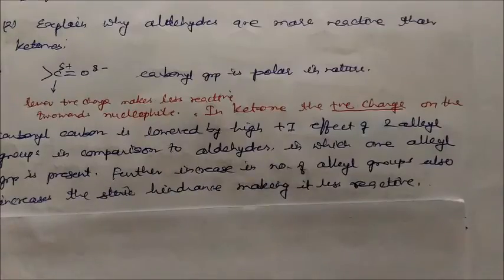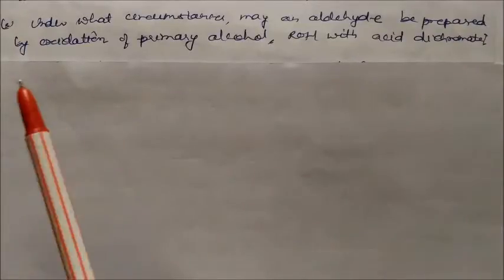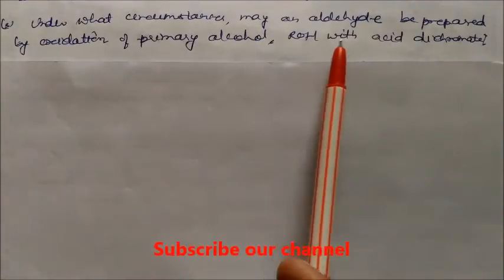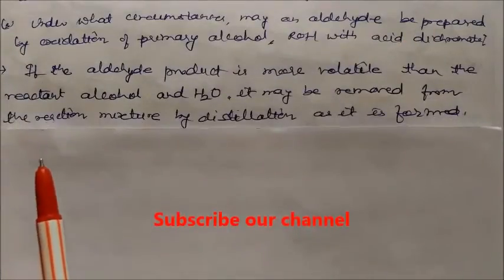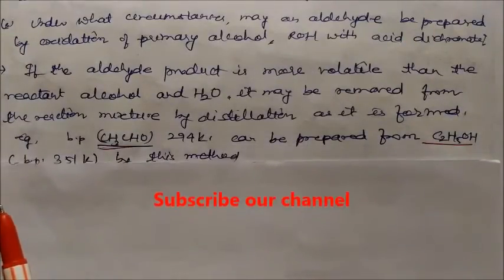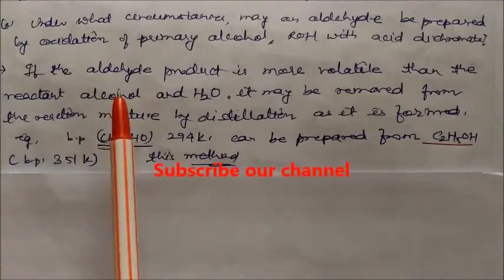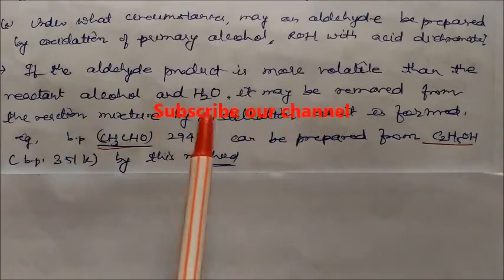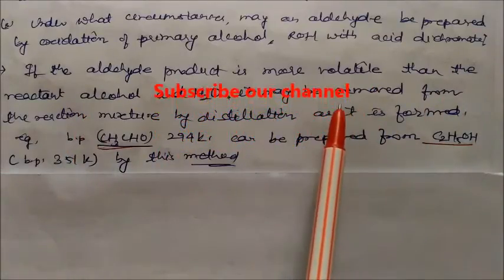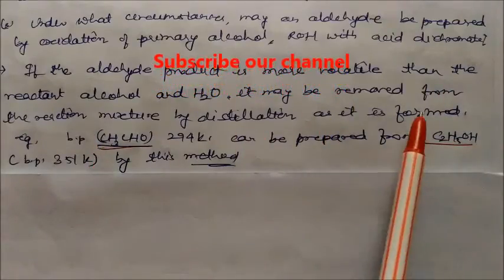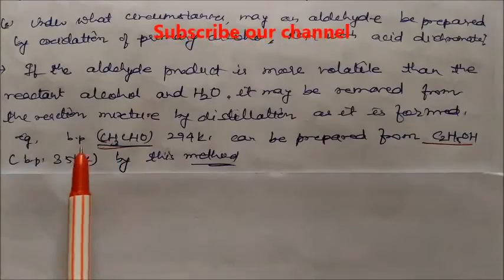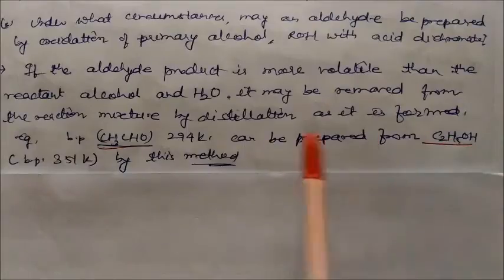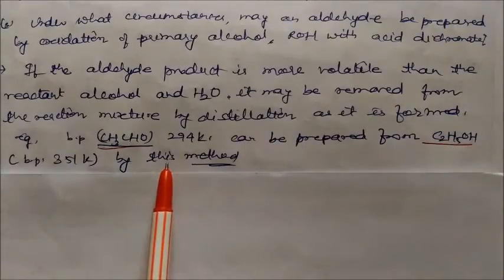Under what circumstances may an aldehyde be prepared by oxidation of a primary alcohol with acid dichromate? If the aldehyde product is more volatile than the reactant alcohol and water, then it may be removed from the reaction mixture by distillation as it is formed. For example, ethanal has a boiling point of 294 K and can be prepared from ethanol whose boiling point is 351 K, by the distillation method. This is the condition to separate the aldehyde from the ethanol.